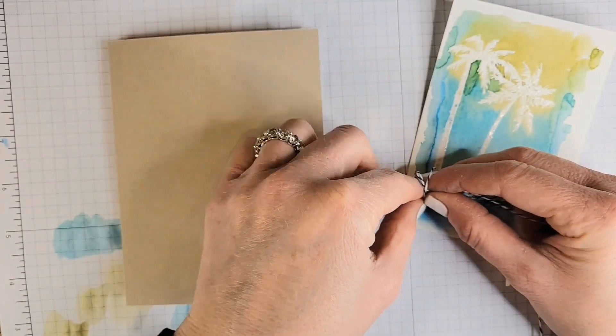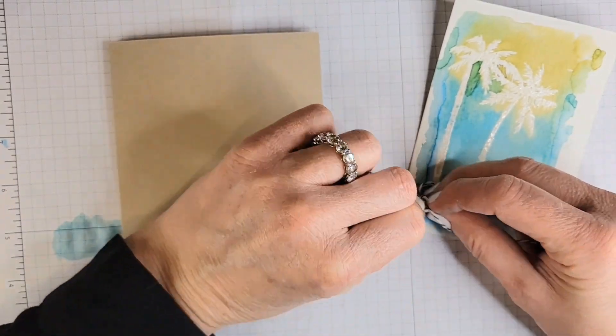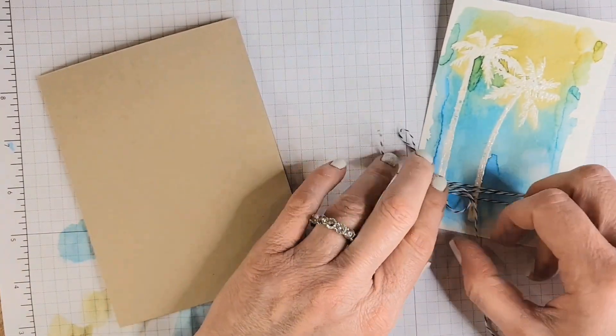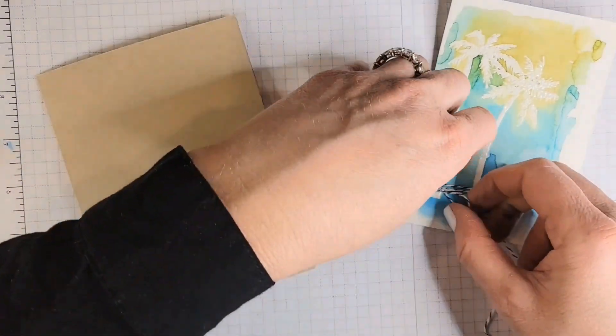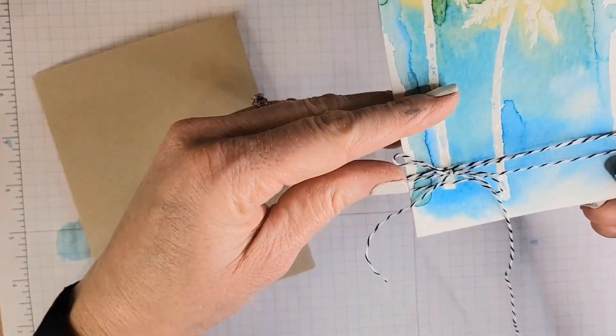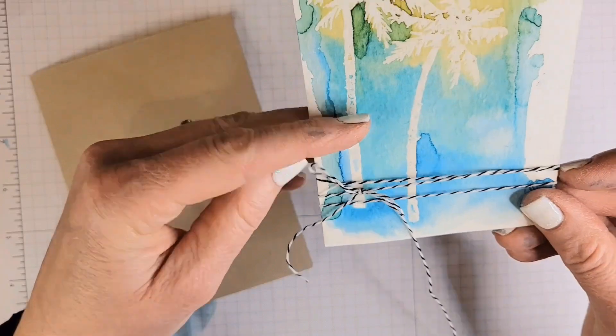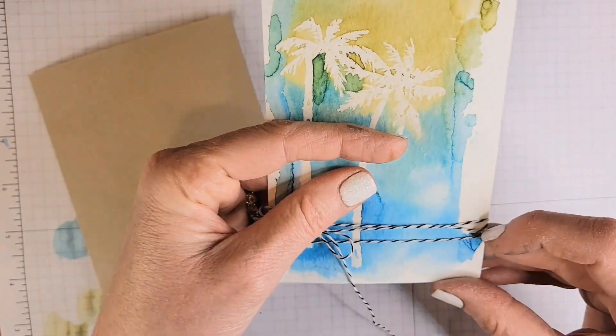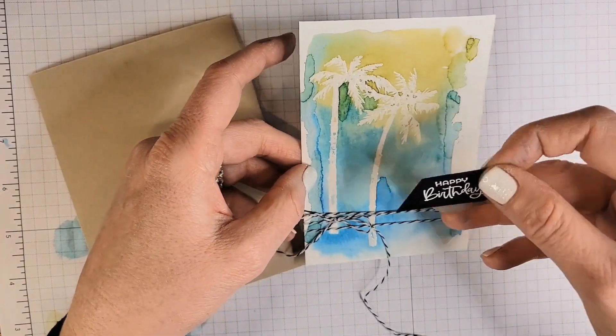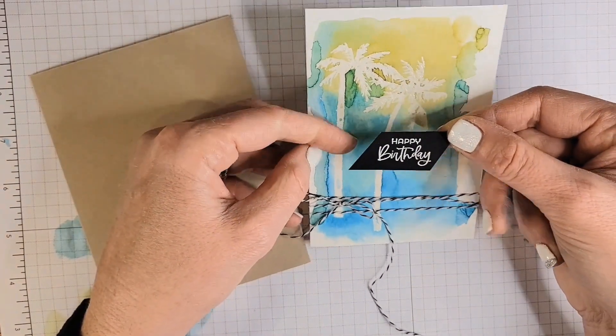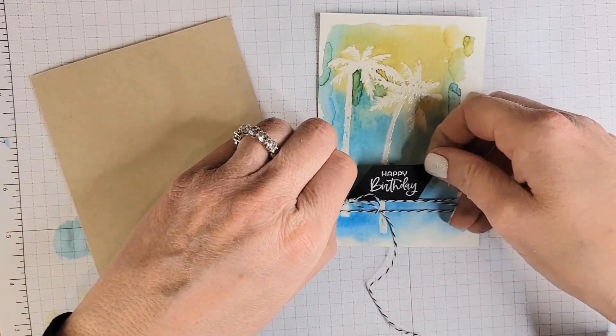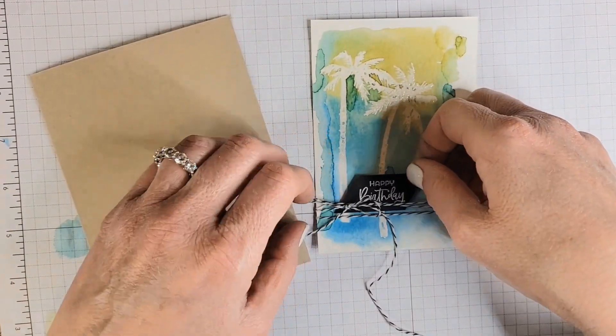And then we need a greeting. Let's get those ears the right length. Okay. That looks good. Let's see. I'm going to adjust this so these overlap a little bit. They're already doing that. Great. And then I prepared beforehand a happy birthday greeting, just white embossing on black cardstock. So let's tuck that down in there.